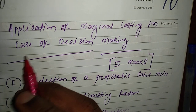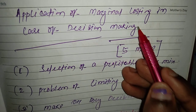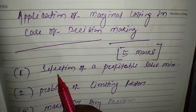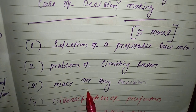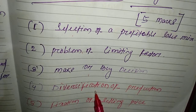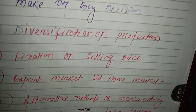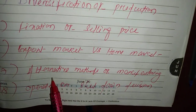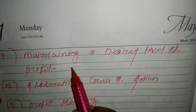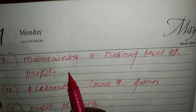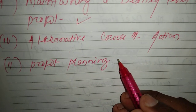So these are the applications of marginal costing: selection of profitable sales mix, problem of limiting factor, make or buy decisions, diversification of production, fixation of selling price, export market versus home market, alternative methods of manufacturing, operating or shut-down decision, maintaining a desired level of profit, alternative course of action, and profit planning. Thank you.